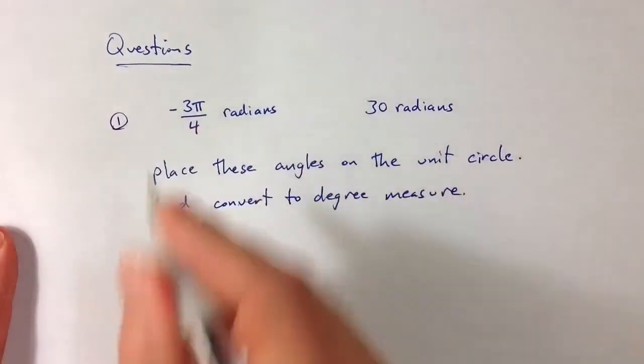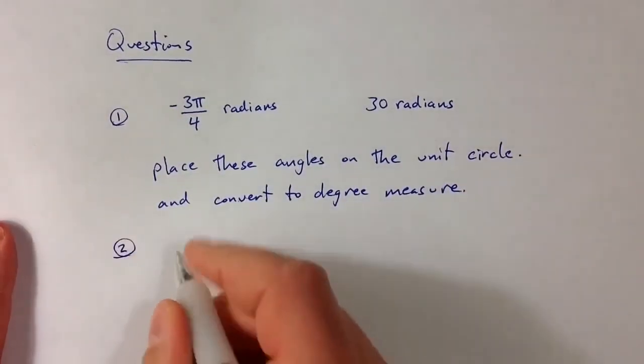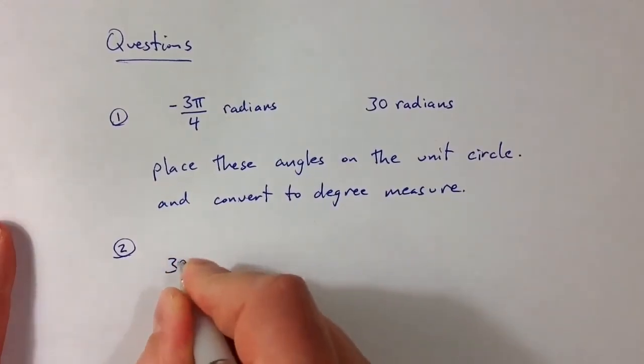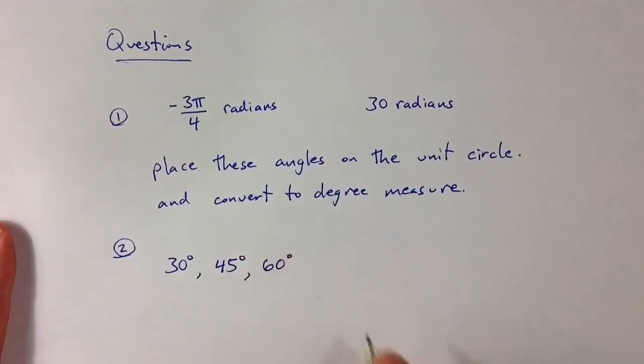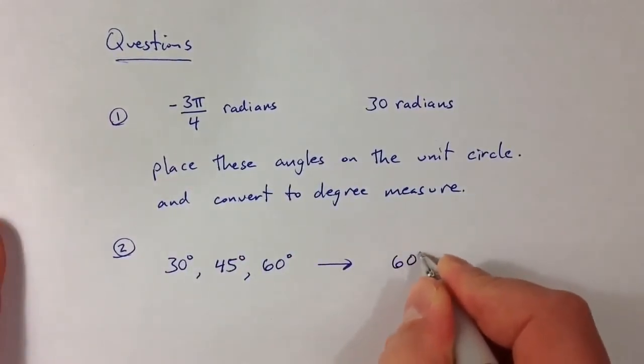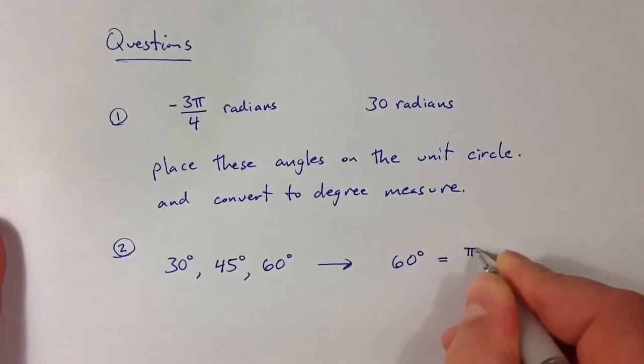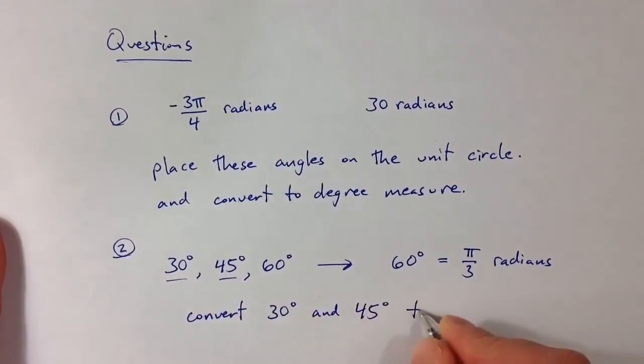That's one question to think about. On the other side of things, starting with degrees, we know that 30 degrees, 45 degrees, and 60 degrees are pretty important. We just made the connection between 60 degrees and π over 3 radians. Try to do a similar conversion for 30 and 45. So convert 30 degrees and 45 degrees to radian measure.